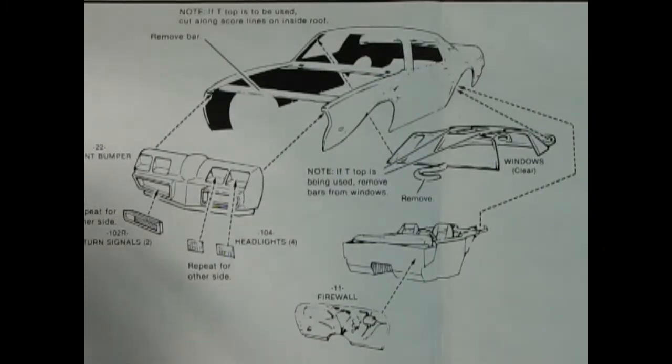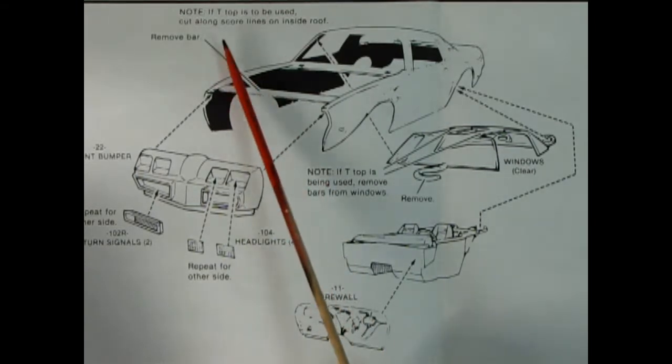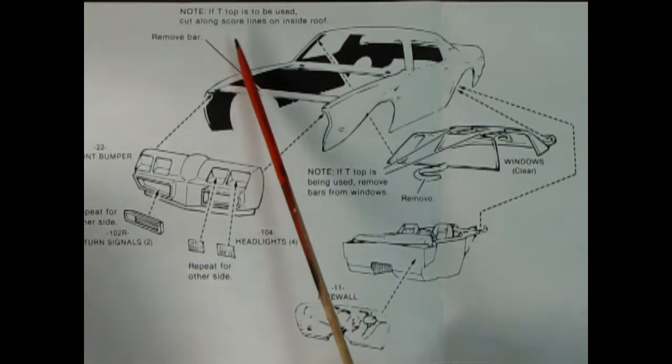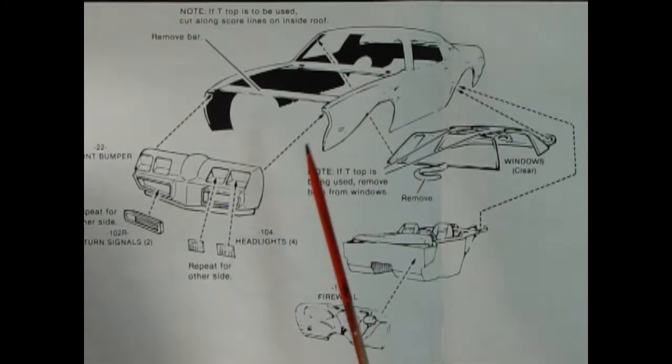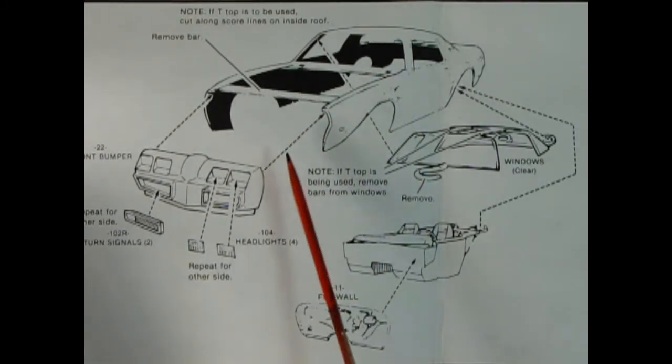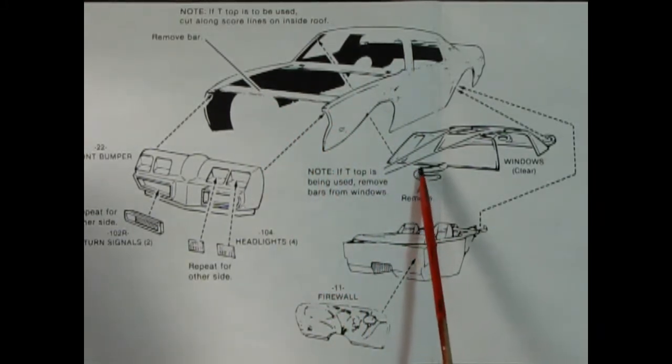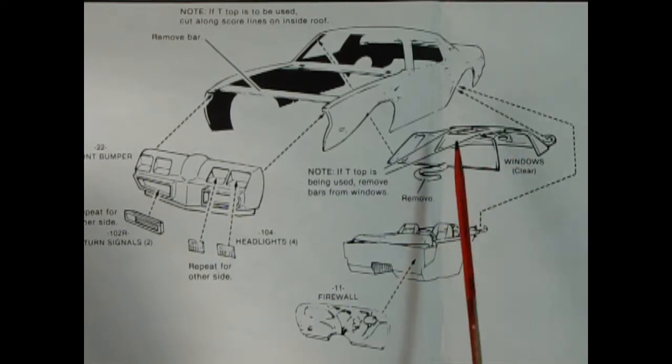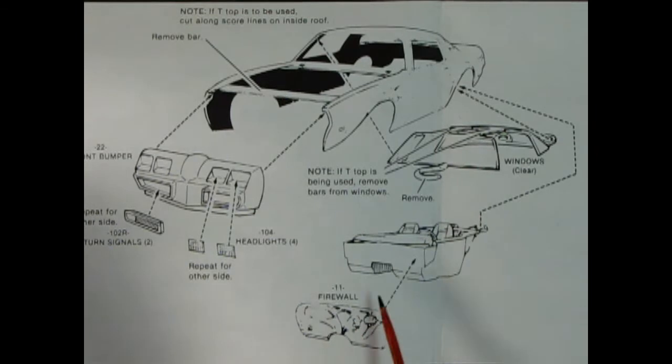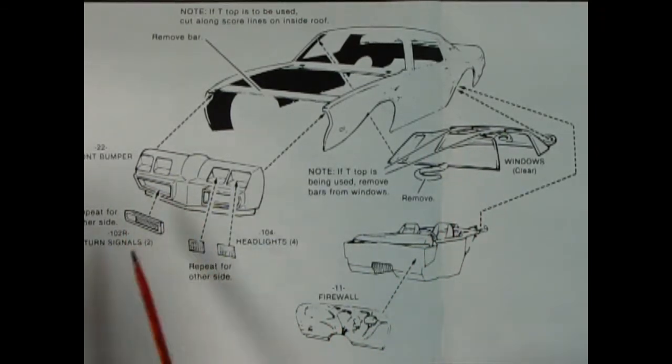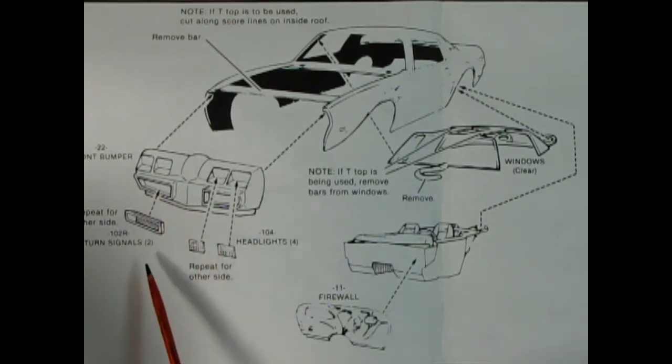Now step 12 shows the body going together. It says if T-top is to be used, cut along score lines on inside of the roof. So here we'd remove this bar out of here. Clip off this little coat hanger ring, which is weird. If T-tops is being used, remove bars from the windows. There's our interior going up underneath in our firewall. Then we've got our front bumper and there's all these little bits that go inside there. The front headlights, there's four of those, and the turn signals for the bottom.